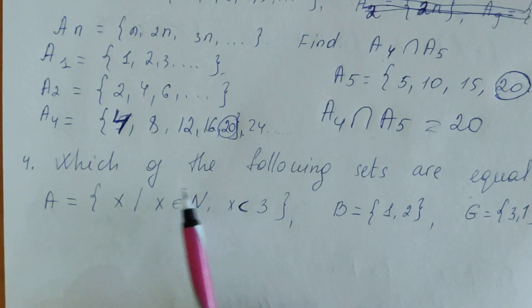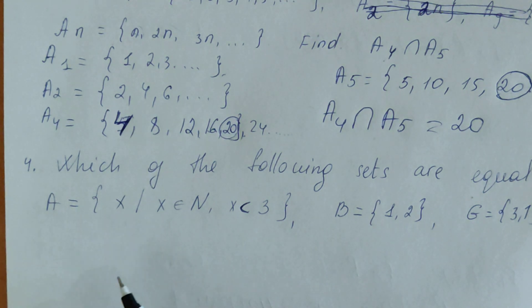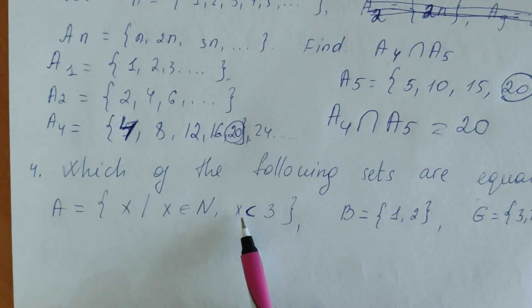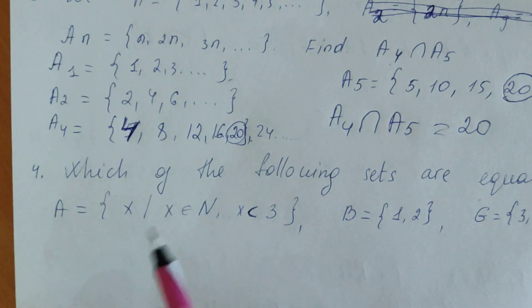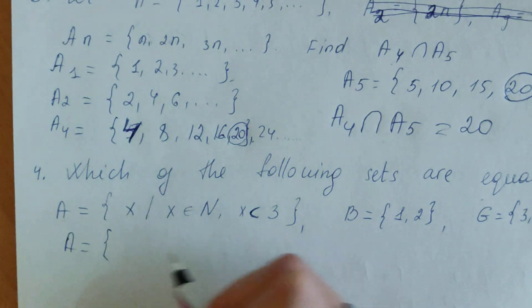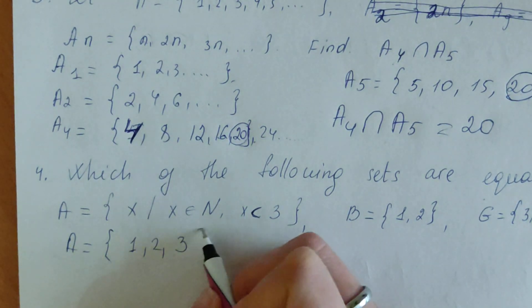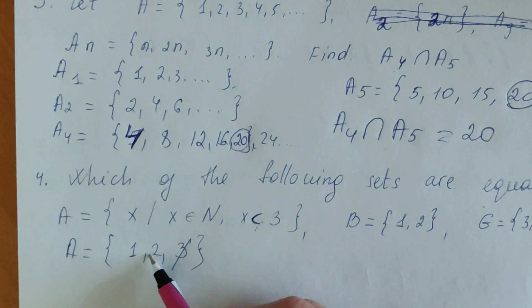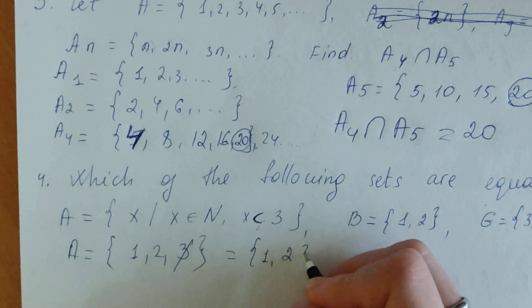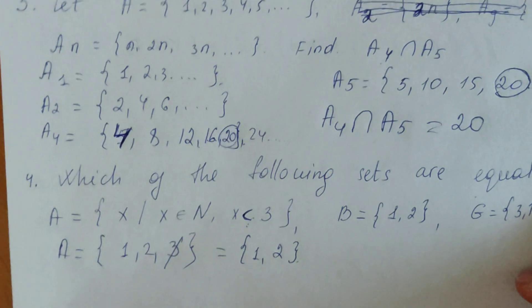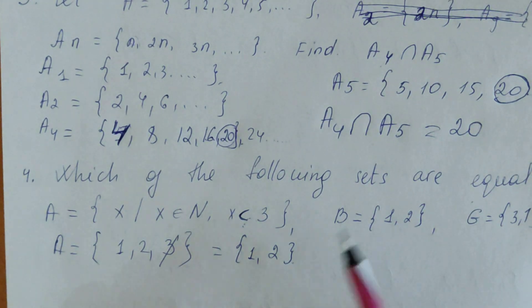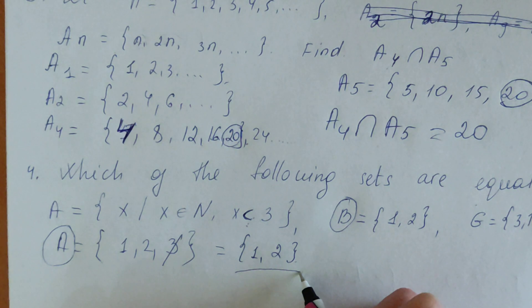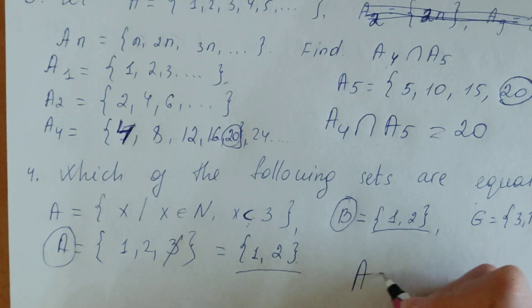Final question: which of the following sets are equal? A consists of elements X such that X is less than 3 and X is a natural number, so A equals {1, 2} — not including 3, because X must be strictly less than 3. B is {1, 2} and G is {3, 1}. Which sets are equal? A and B are equal, because the elements of A are {1, 2} and the elements of B are {1, 2}. So A equals B.